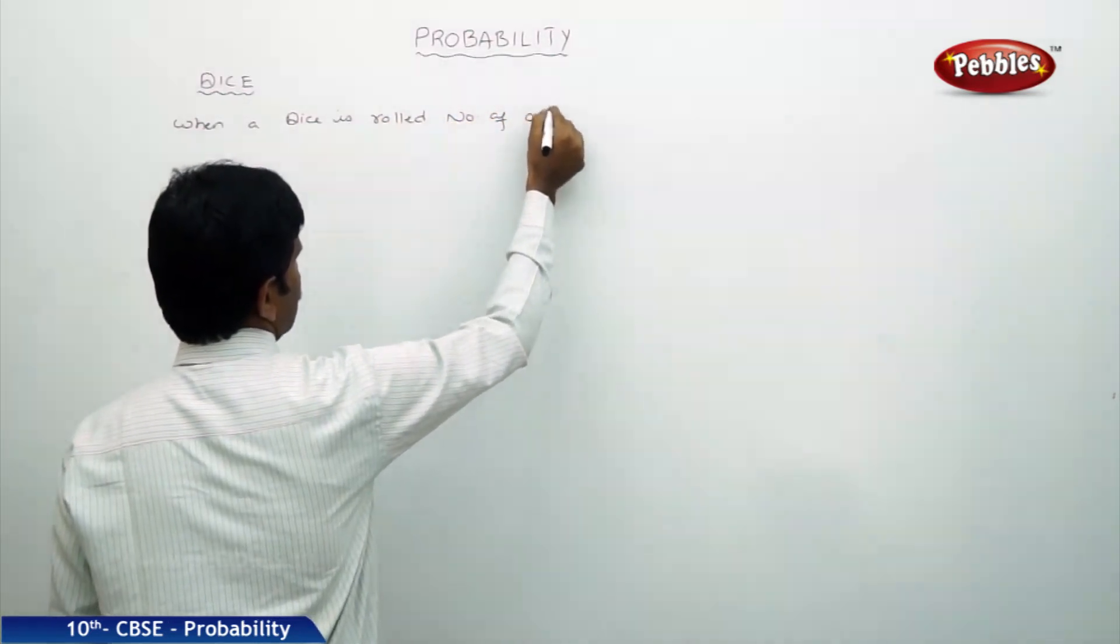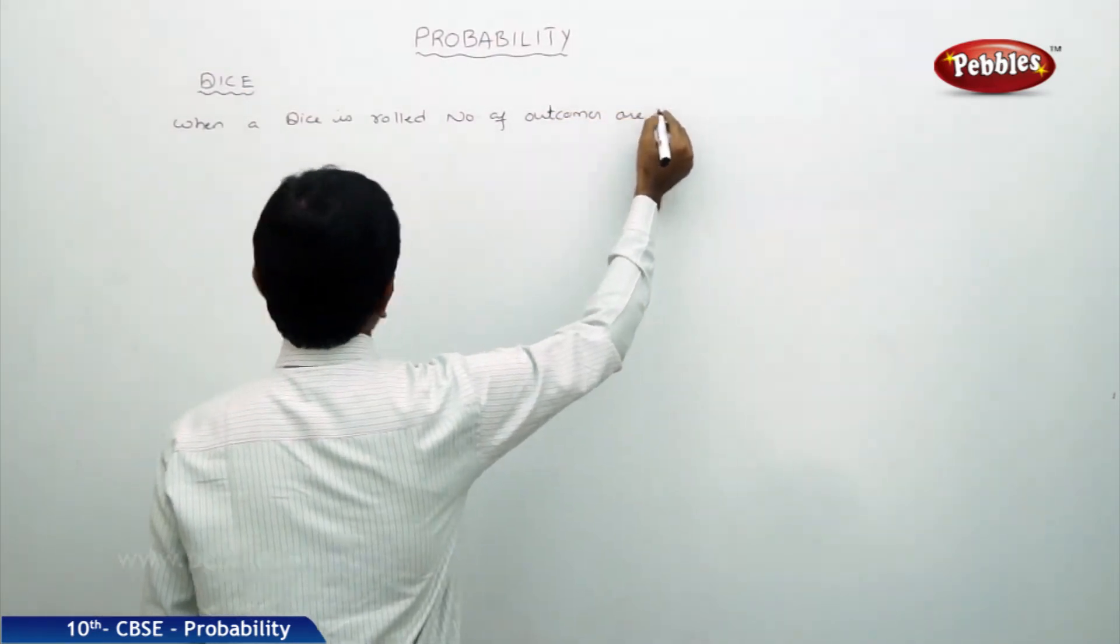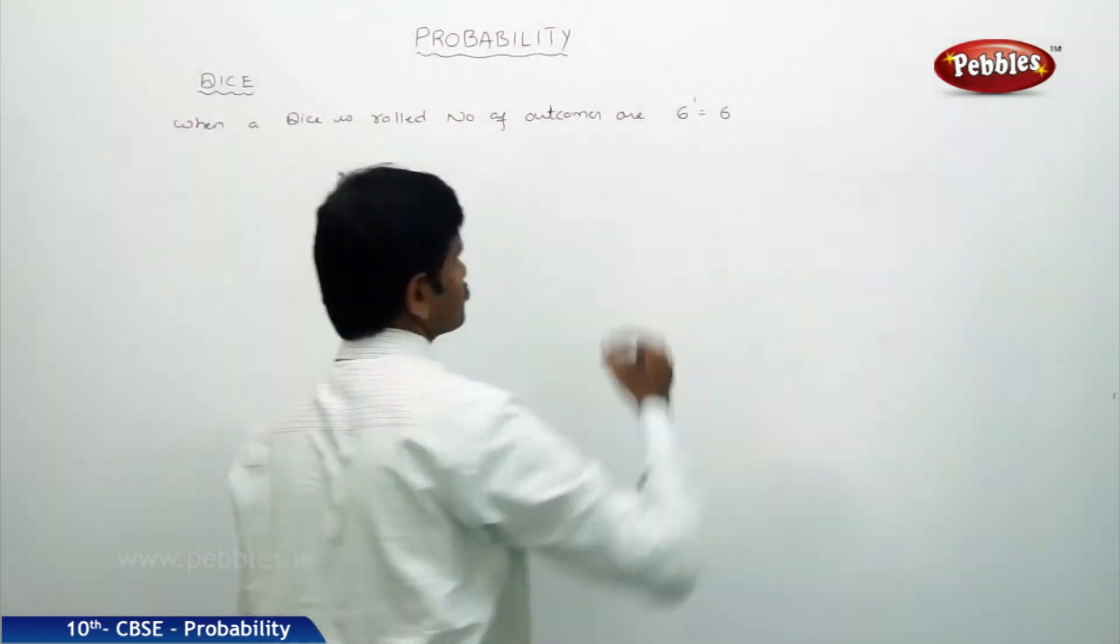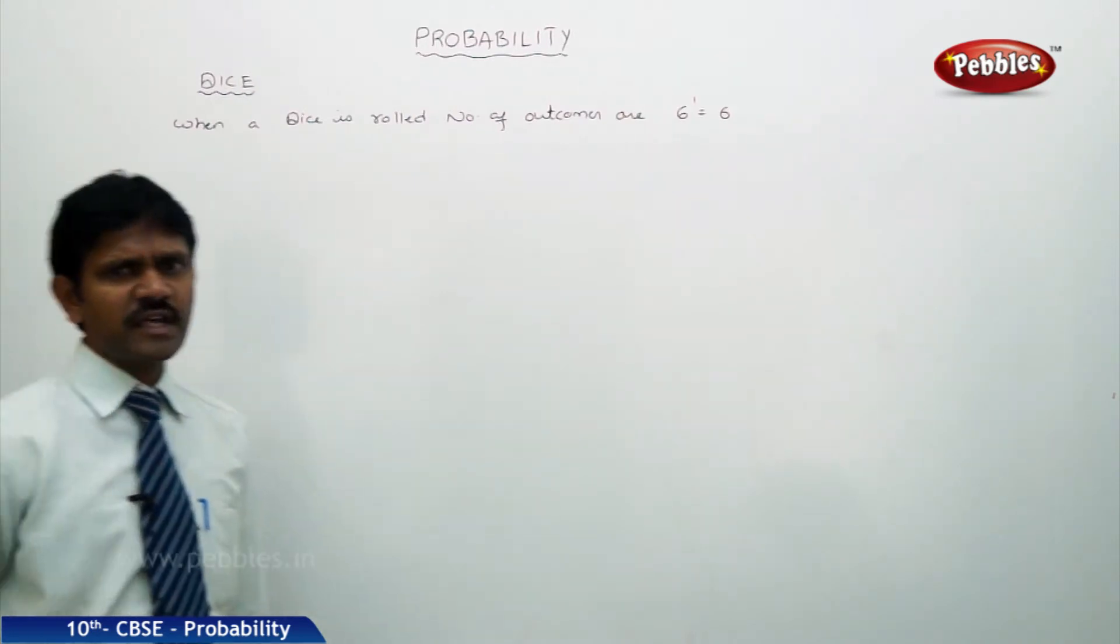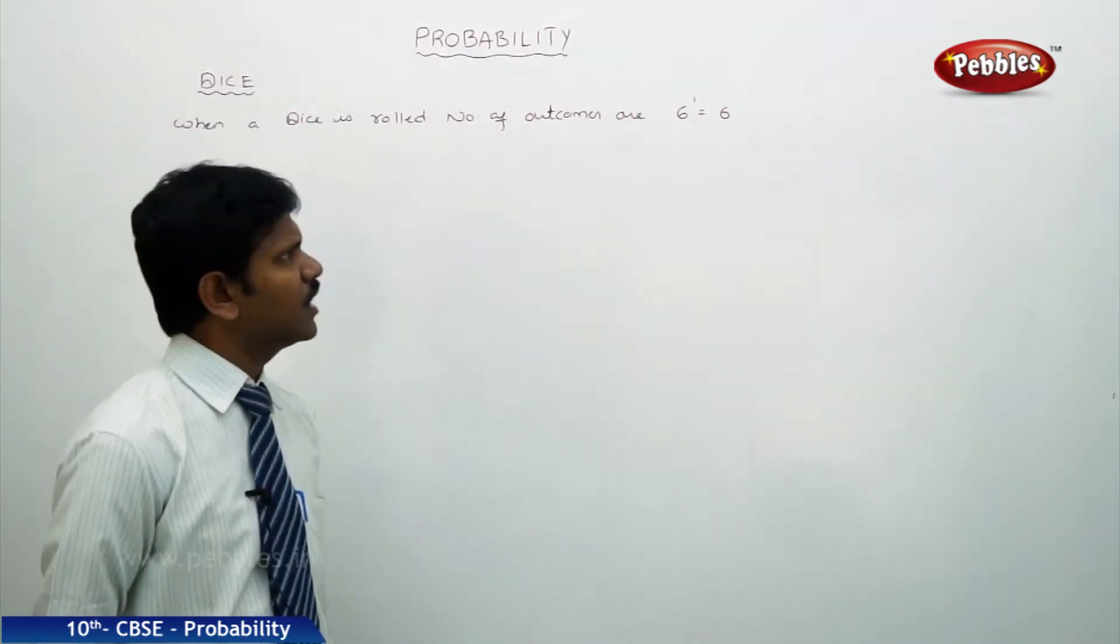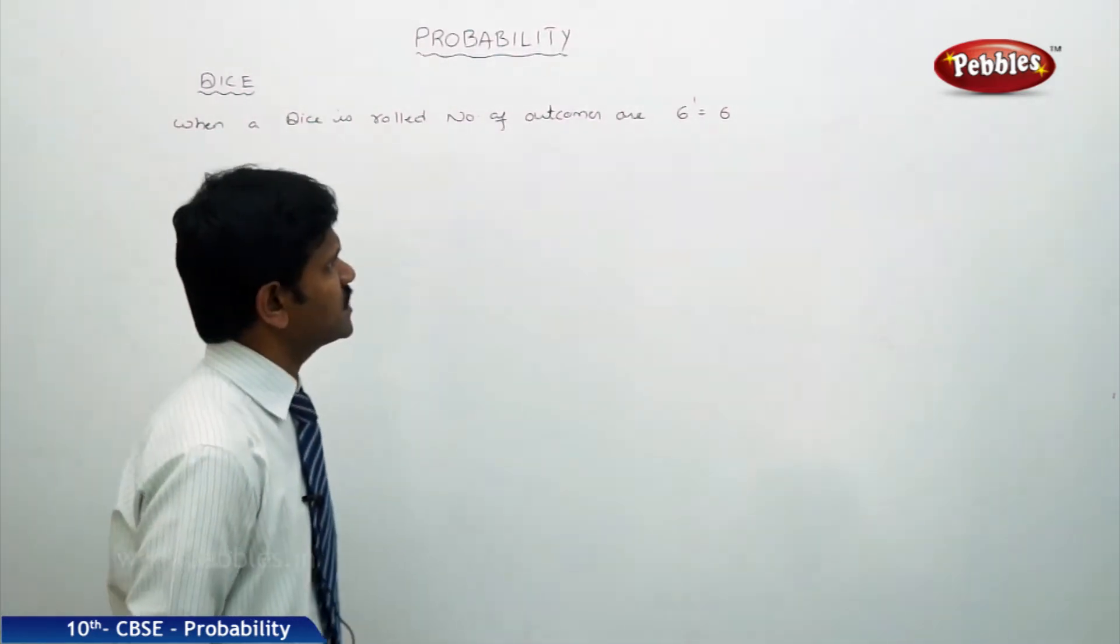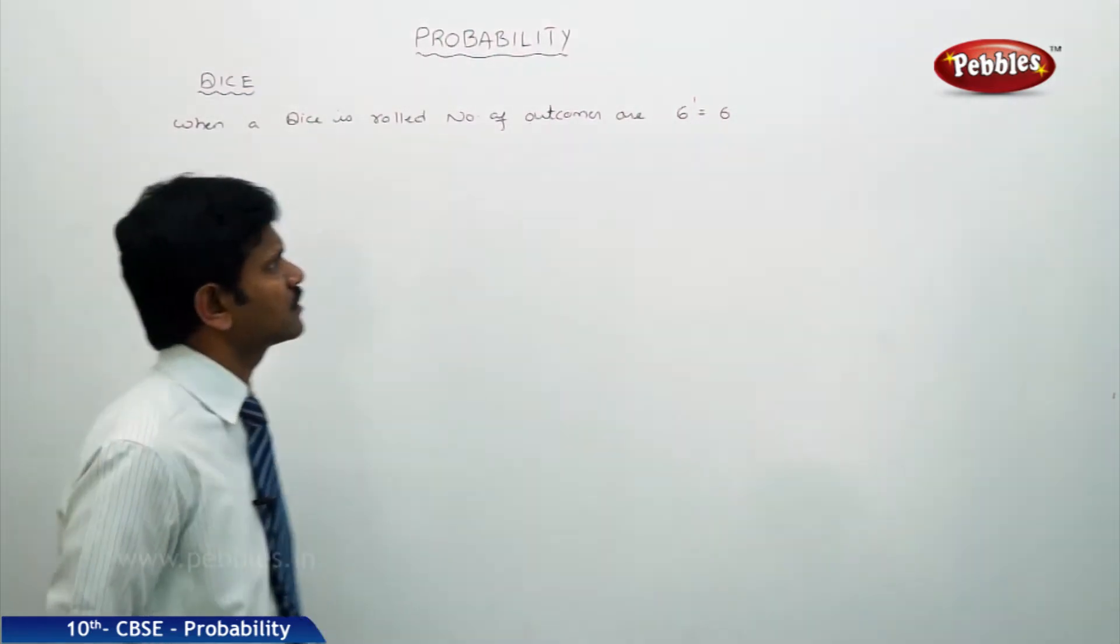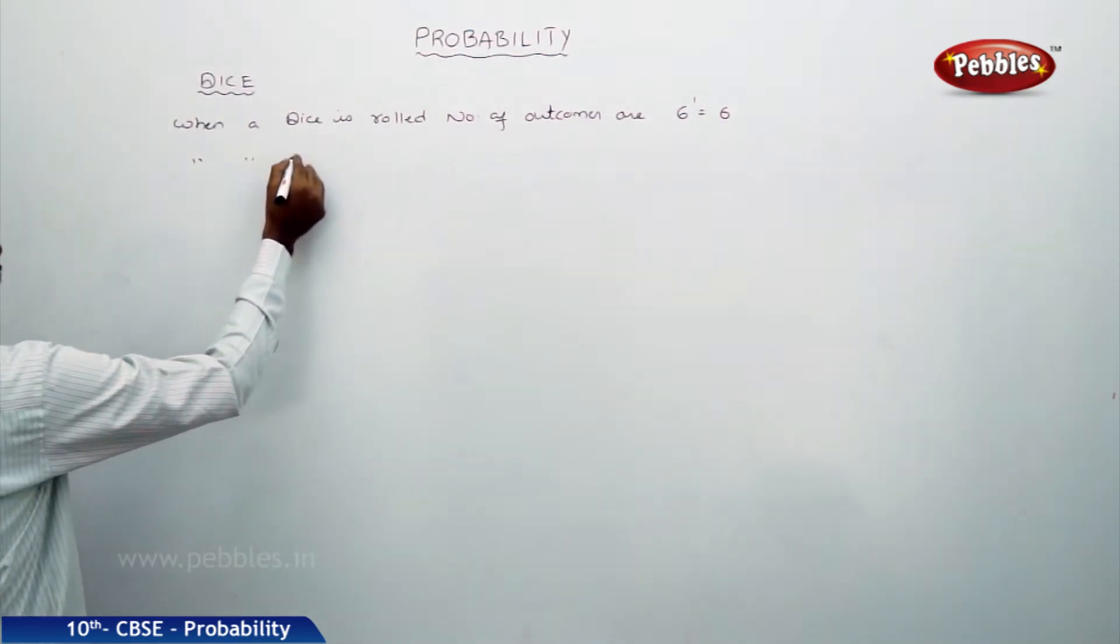The number of outcomes are 6 to the power 1, that is 6. Why 6? Because a die has six faces: 1, 2, 3, 4, 5, 6. When a die is rolled once, the number of outcomes is 6^1, which equals 6.